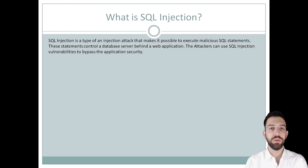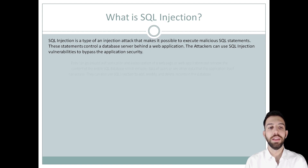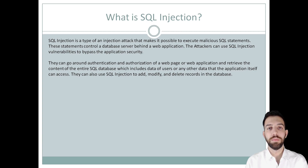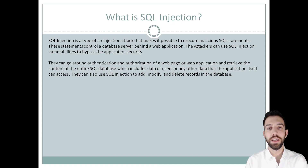Attackers can use SQL Injection vulnerabilities to bypass application security. They can go around authentication and authorization of a web page or web application and retrieve all the data of the users or any other data that the web application itself can access. They can also use SQL Injection to add, modify, or delete records from the database.